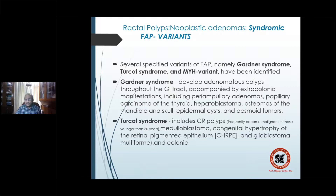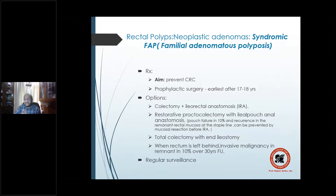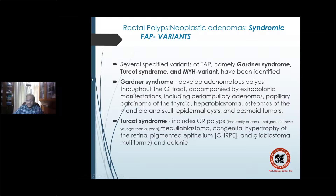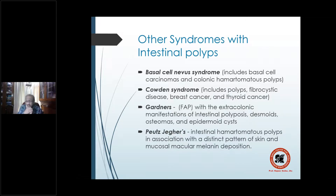The second group of syndromic neoplastic adenomas: FAP was the first. The second is a variant of FAP with the same primary genetic defect but variable penetration. These include Gardner syndrome, Turcot syndrome, and MYH-associated variant. These syndromes have associated multiple organ involvement. In addition, there are other syndromes with intestinal polyps, both neoplastic and non-neoplastic — basal cell nevus syndrome, Cowden syndrome, and Peutz-Jeghers syndrome.